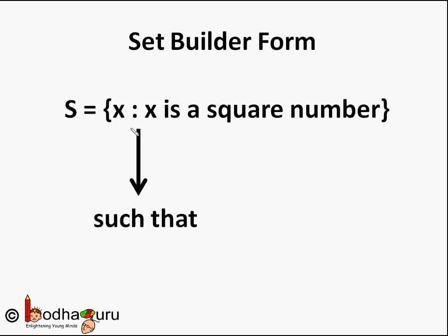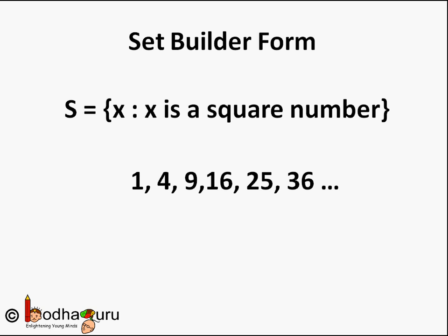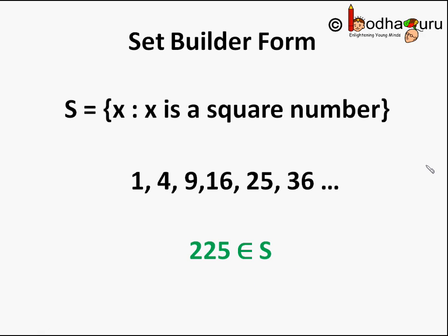So this set would have numbers like 1, 4, 9, 16, 25, 36 and so on — it is a perfect square. Let's take any random square number, say 225. It's a perfect square number: 15 squared equals 225. So it belongs to this set — 225 belongs to this set. For example, 226 is not a square number, so it doesn't belong to set S. We write that with E struck off.